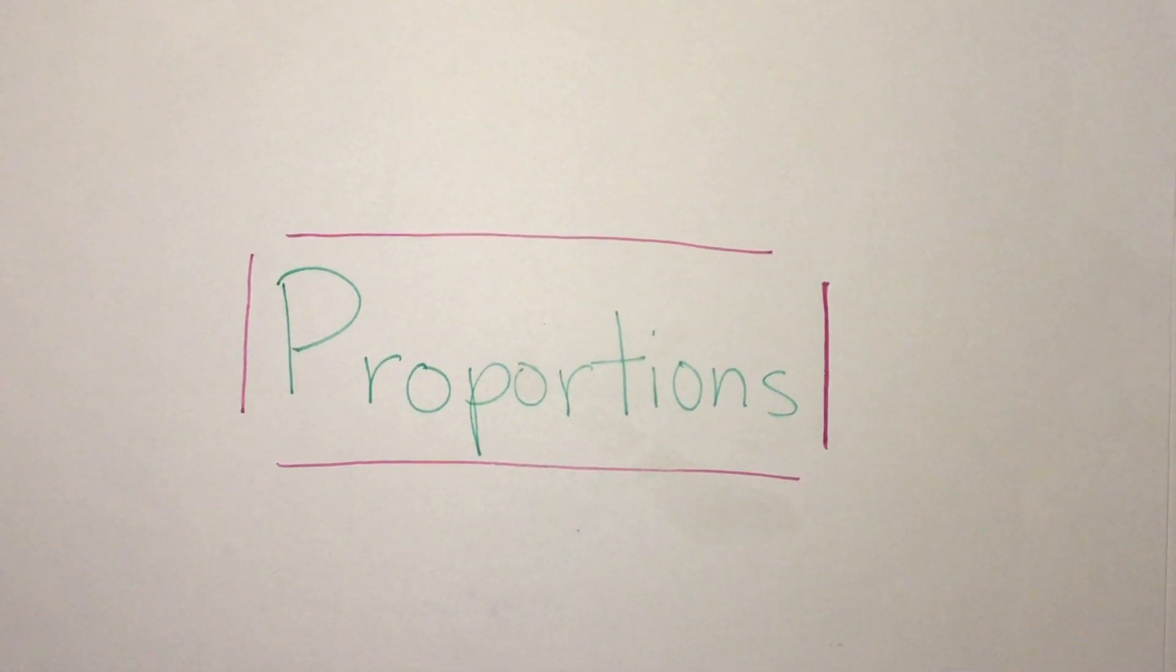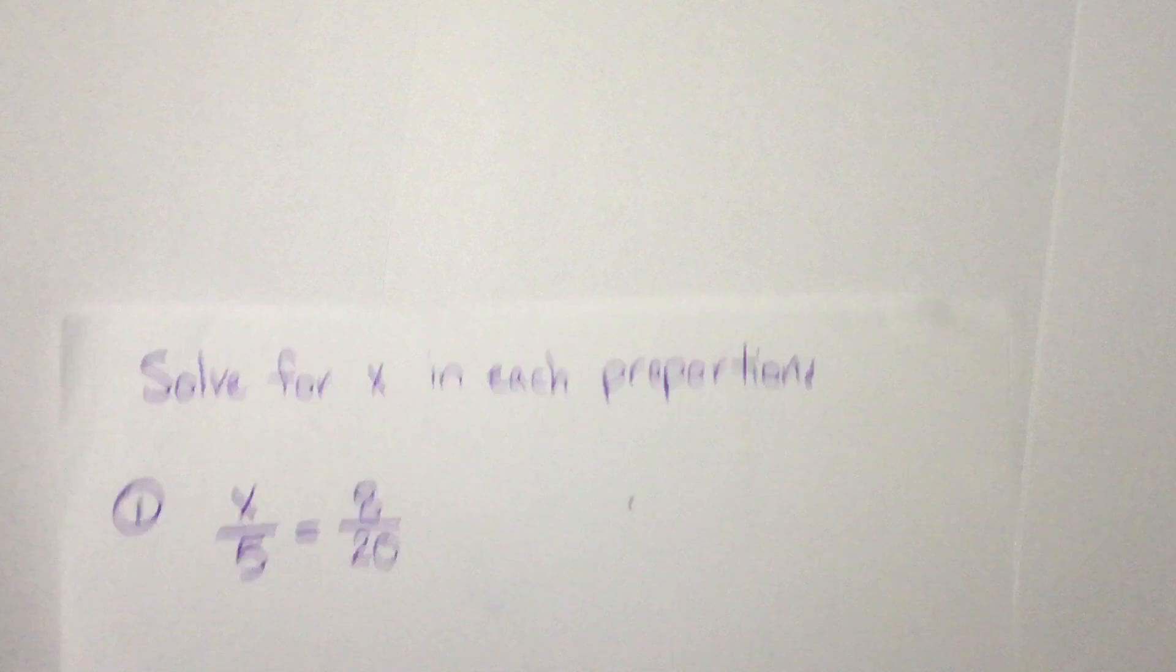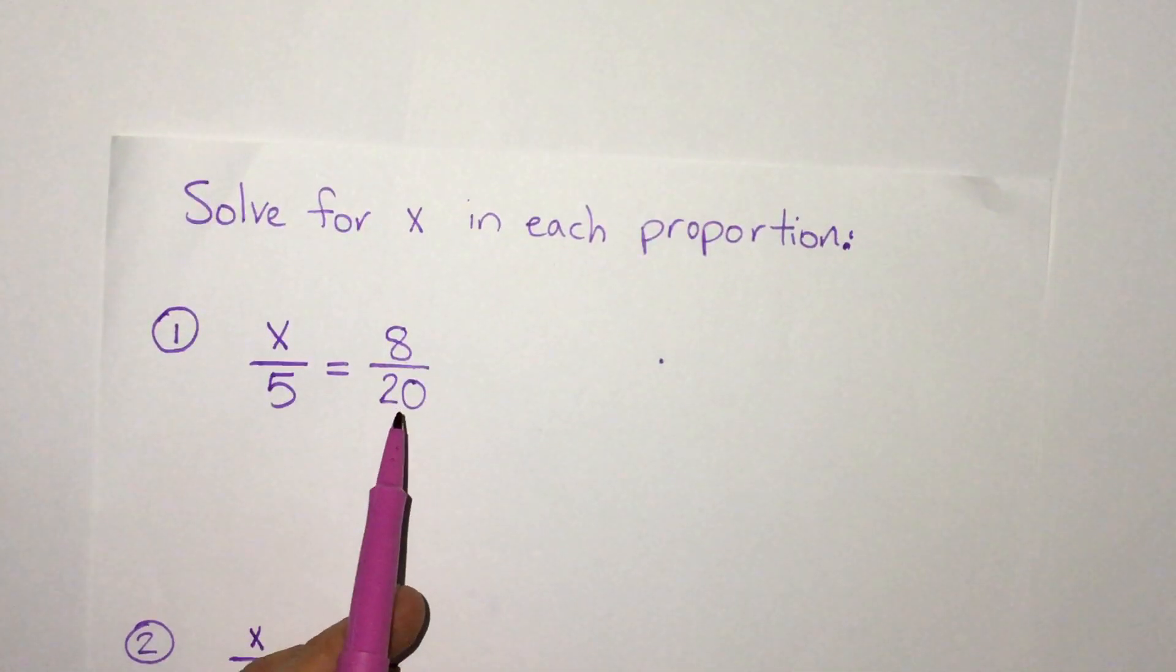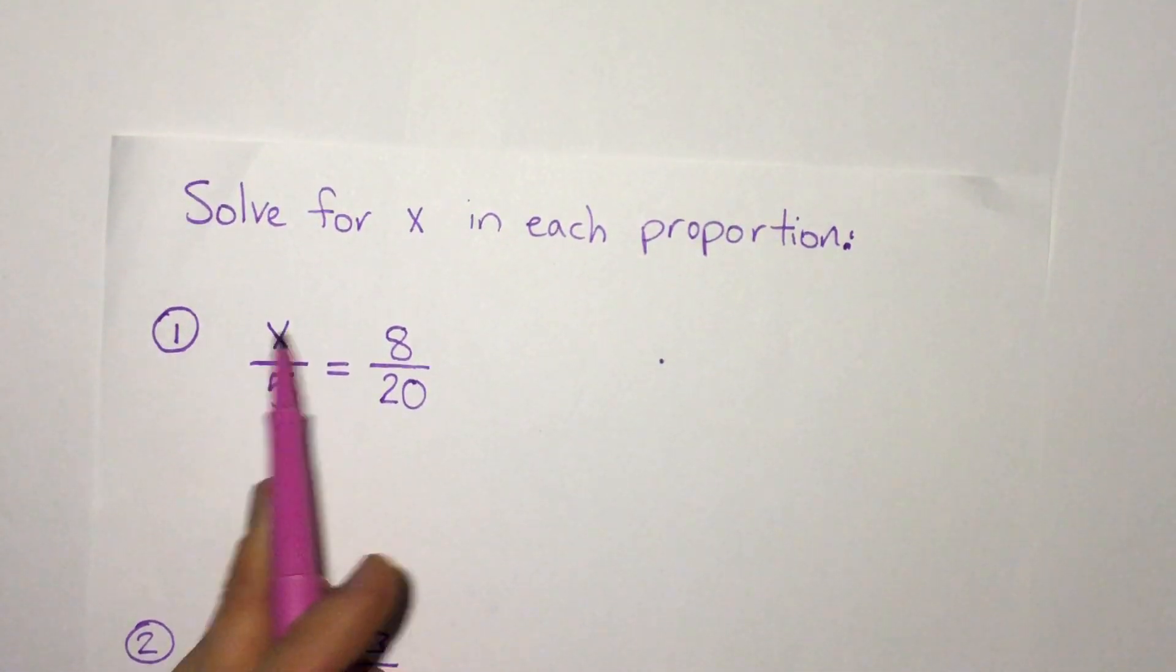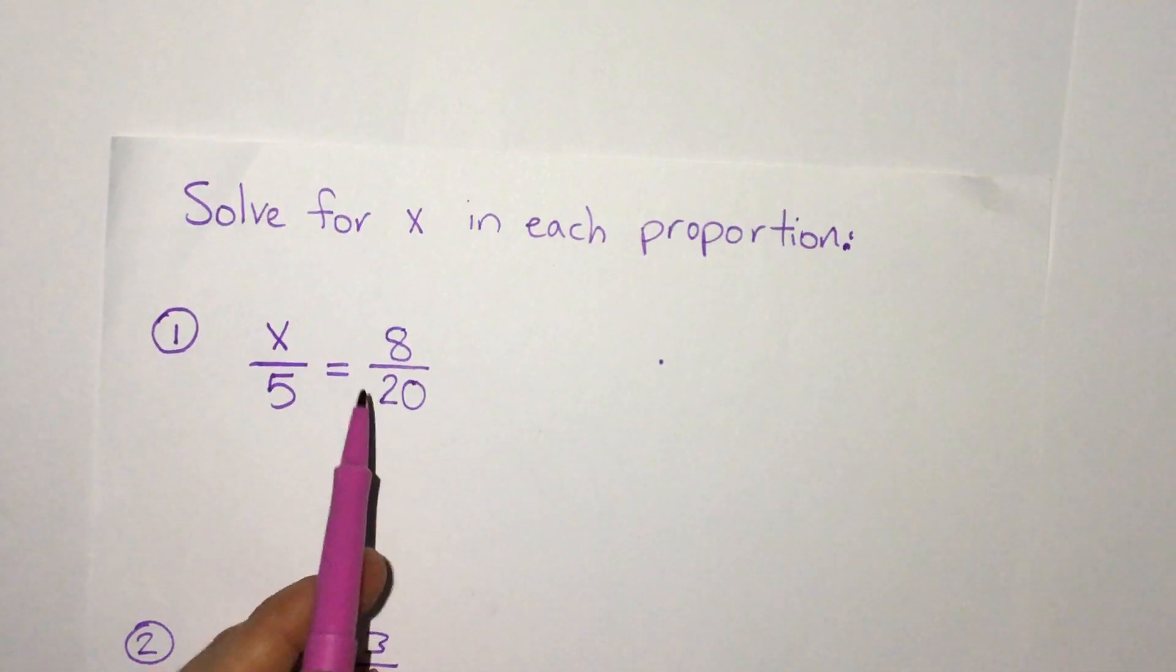In this lesson we'll be looking at how to solve proportions with an x or an unknown number in them and how to set up a story problem to be a proportion that we can solve. When we talk about proportions we're talking about two equal fractions and typically that means we're solving something that's unknown in one of the fractions.